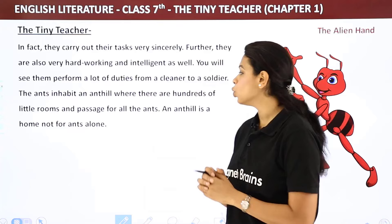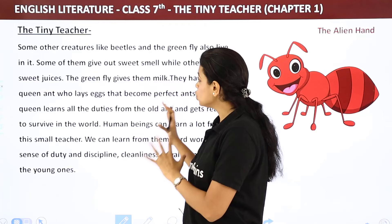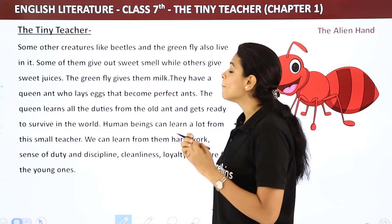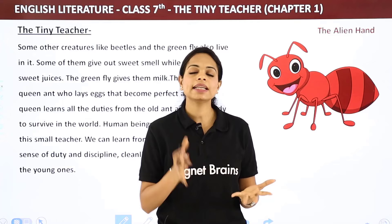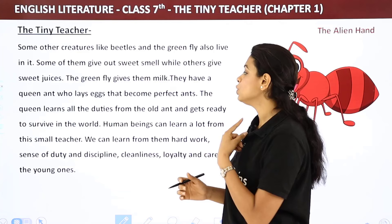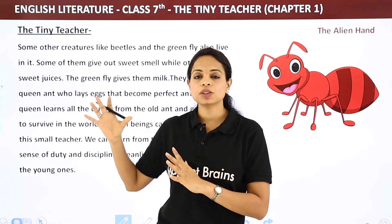An ant hill is a home not for ants alone — other creatures like beetles and the green fly also live in it. Some are kept for their sweet smell, while others like the green fly give milk — honeydew — to the ants. There is a queen ant who lays eggs that become perfect ants. New ants learn all duties from old ants before going out into the world.